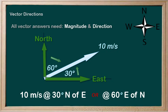So our final answer describing this vector could be either 10 meters per second at 30 degrees north of east or 10 meters per second at 60 degrees east of north.